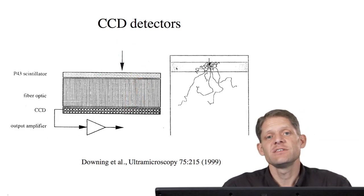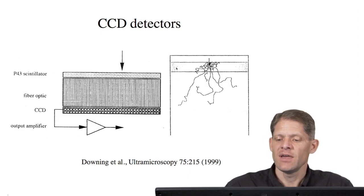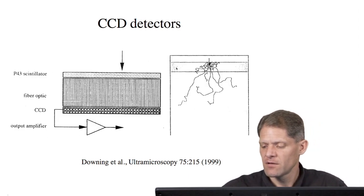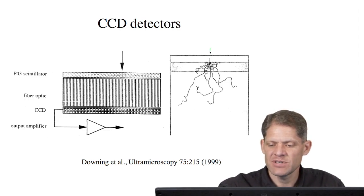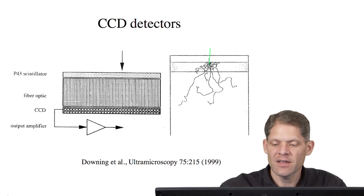The main disadvantage of CCD cameras is that as the electron comes down through the column and hits the scintillator, it's scattered and can be scattered quite a distance away from the position that it first entered.